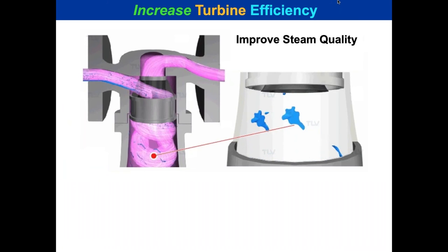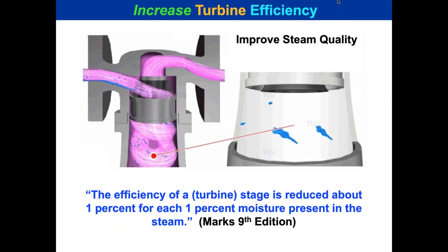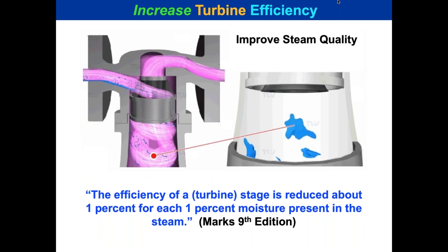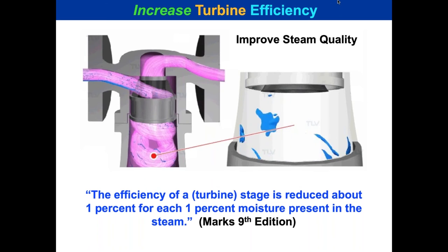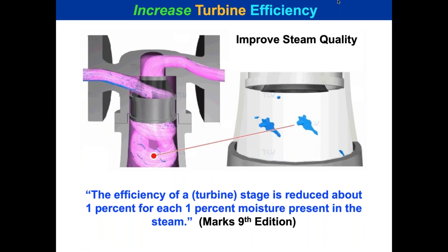We like to use separators on turbines. According to Marks, the efficiency of a turbine stage is reduced about one percent for each one percent of moisture. Why would you install equipment and deliberately reduce its efficiency? A separator doesn't reduce steam used but improves reliability. TLV separators achieve at least 98% moisture removal, bringing you to 99.7% or higher dry steam.